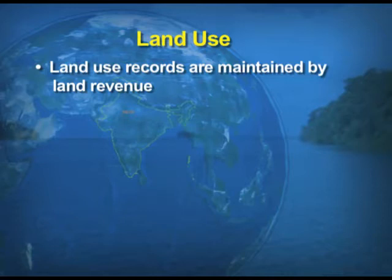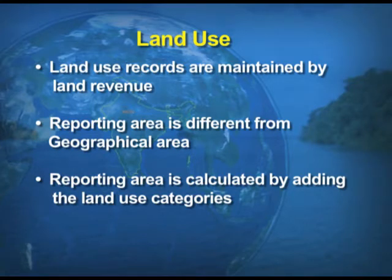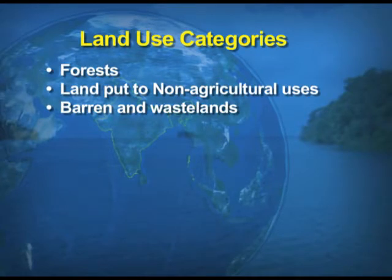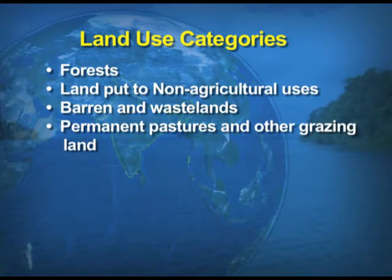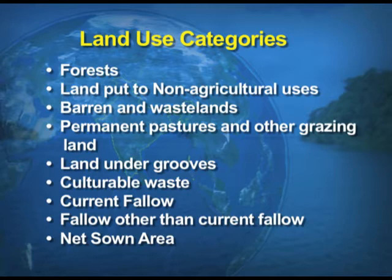The land use records are maintained by land revenue. Reporting area is different from geographical area. Reporting area is calculated by adding the land use categories, and the geographical area is measured by the Survey of India. The different land use categories are: forests, land put to non-agricultural uses, barren and wastelands, permanent pastures and other grazing land, land under groves, culturable wasteland, current fallow, fallow other than current fallow, and net area sown.